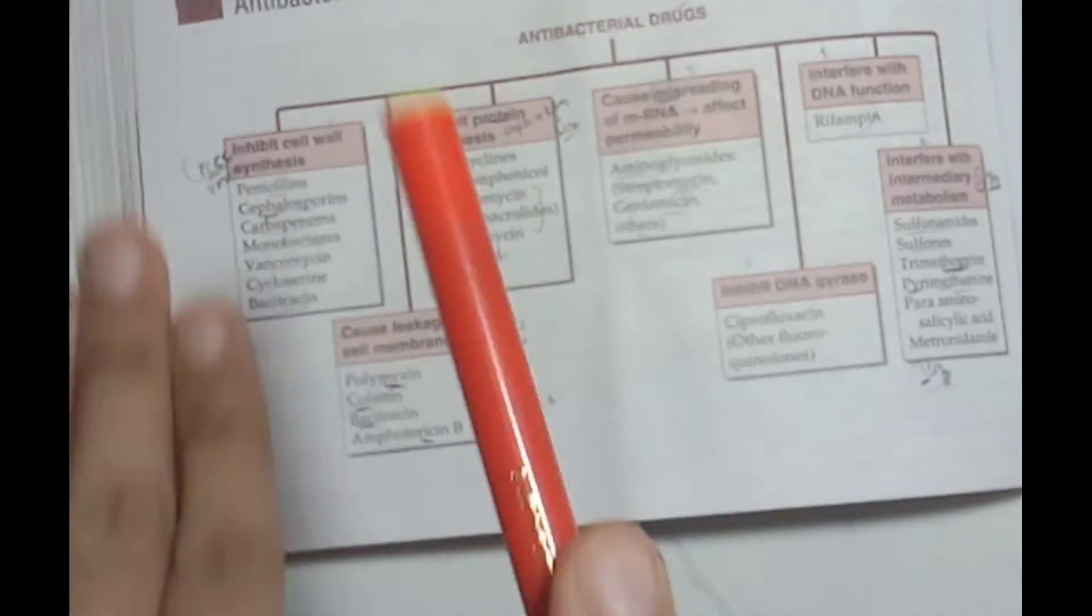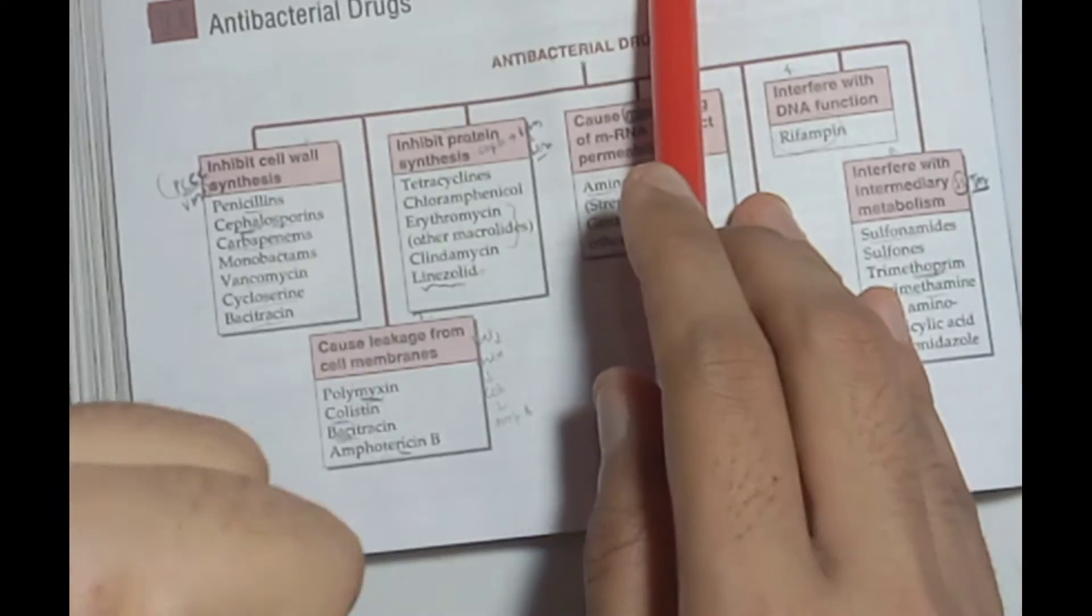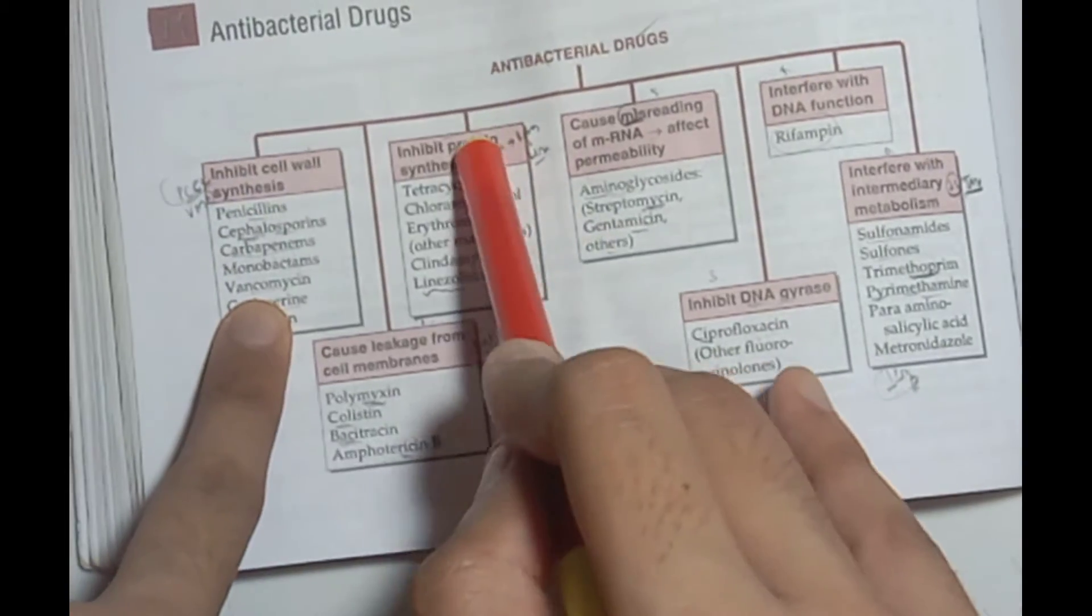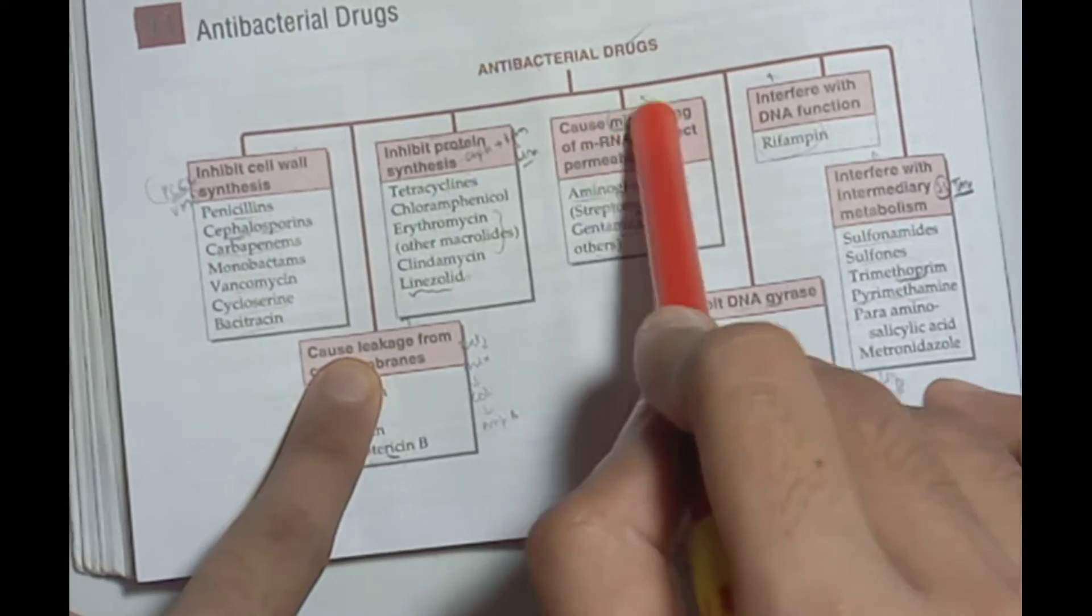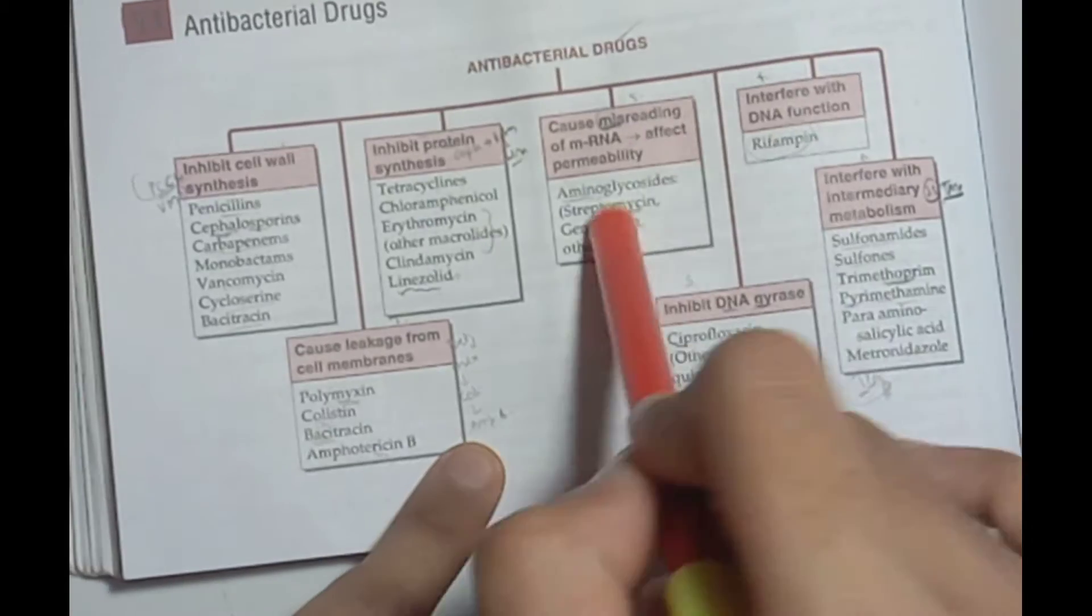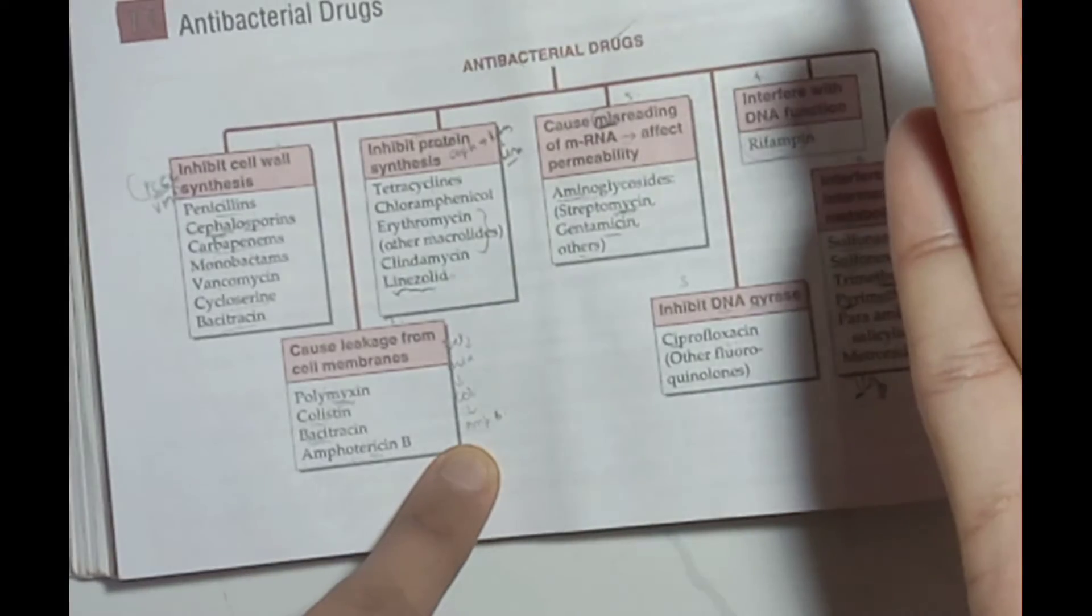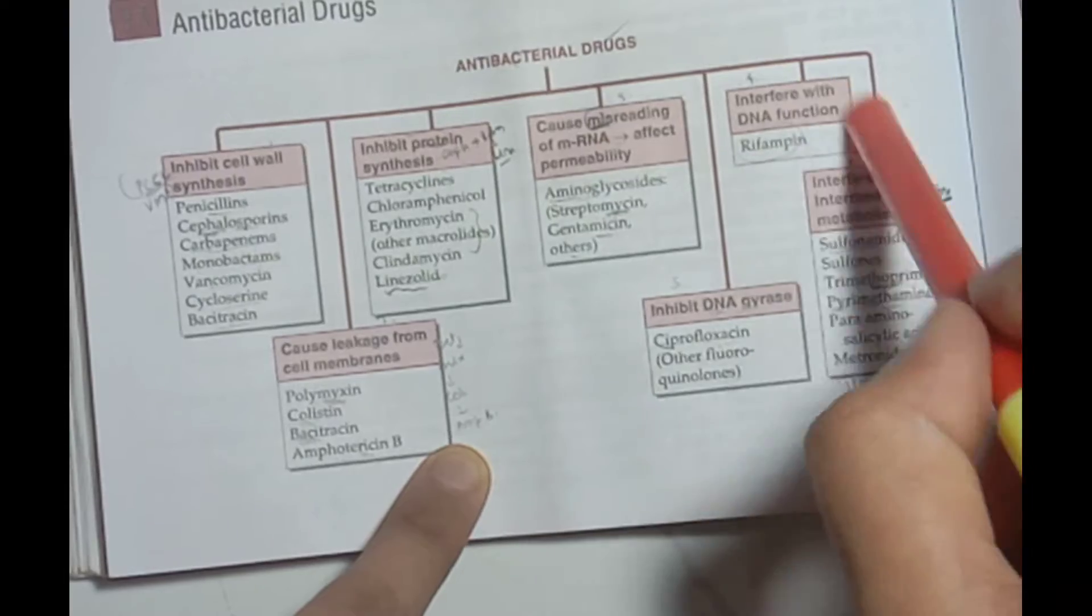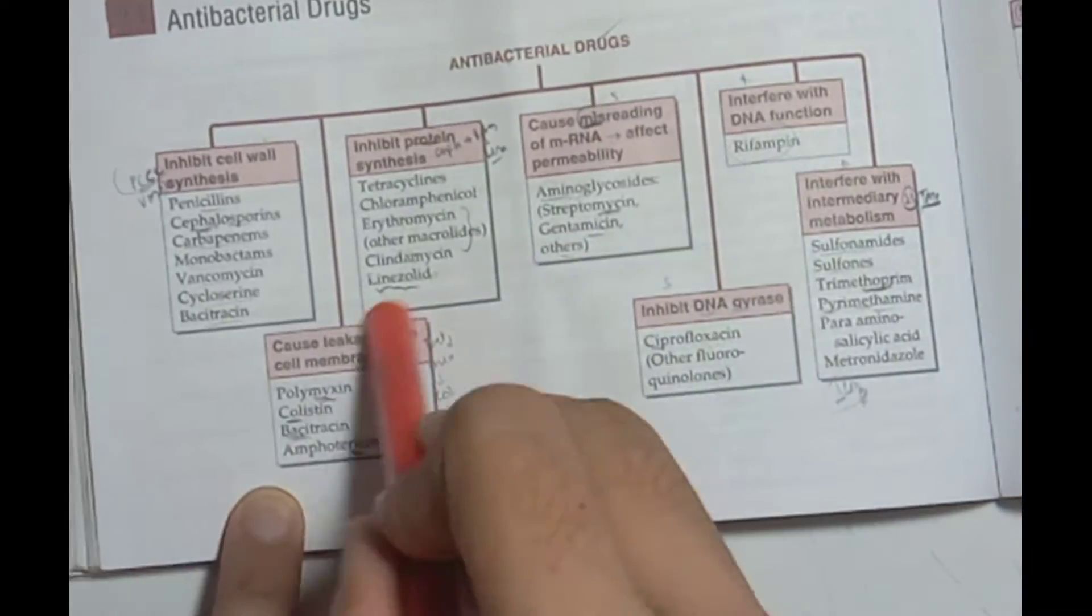We need to remember the headings of the antibacterial drugs and the heading structure. We have cell wall synthesis, protein synthesis, misreading of mRNA, permeability, DNA function interference, and intermediary metabolism. Then we have DNA gyrase enzyme inhibitors - six headings. And if we have cell leakage, that's seven headings total.